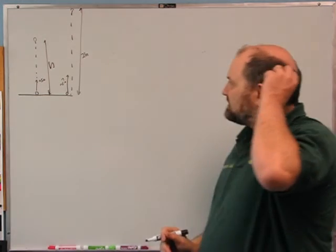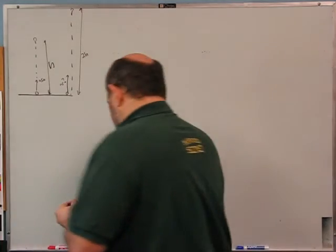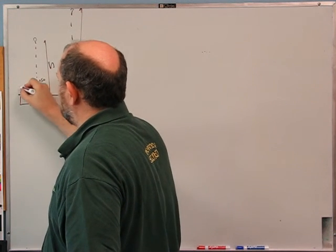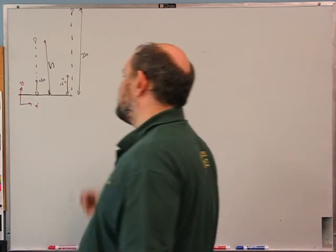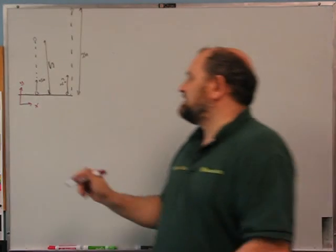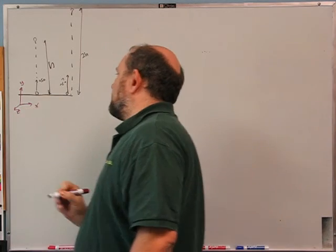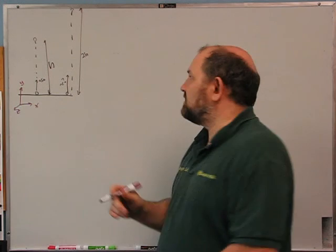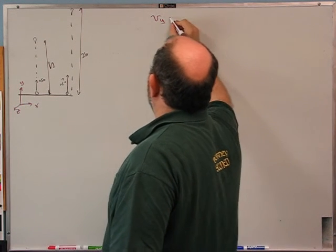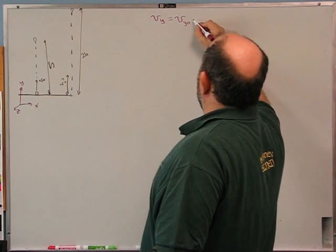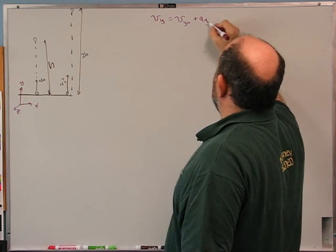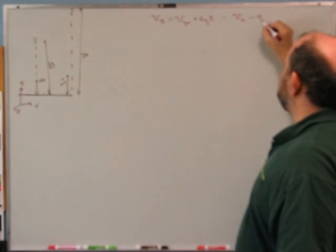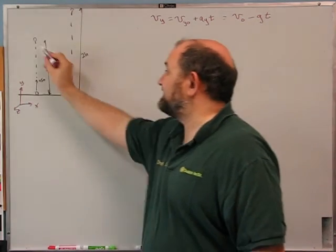Let's define some axes. I'll use the y-axis as vertical. Nothing's moving in x or z, so we only have y to worry about. The equations we have are: vy = vy0 + ay·t = v0 − g·t, and y = y0 + vy0·t + ½·ay·t². I'm setting y0 = 0, starting from the ground. The acceleration ay = −g, because gravity points in the negative y direction.